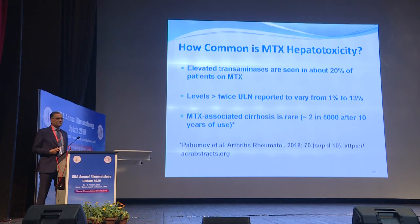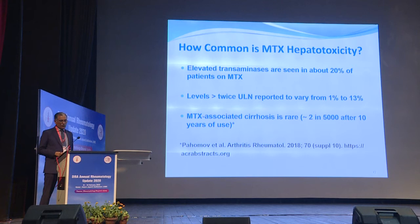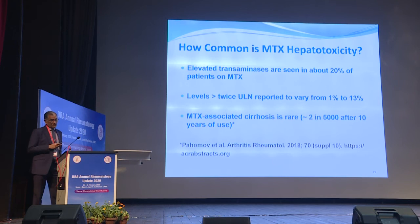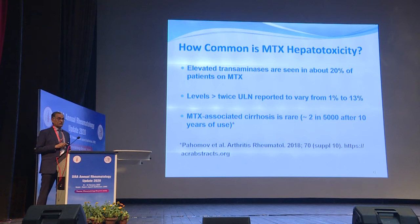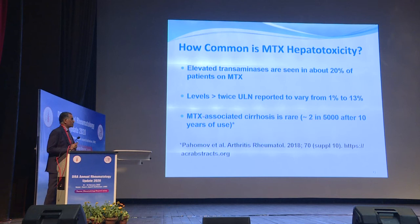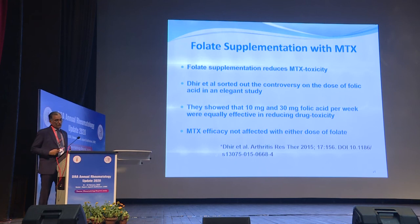How common is methotrexate hepatotoxicity? Elevated transaminases are seen in about 20% of patients on methotrexate. However, levels more than twice the upper limit of normal vary from 1% to 13% in different studies. Methotrexate-associated cirrhosis is exceedingly uncommon — current estimates are 2 in 5,000 after 10 years of use — but it does occur. Routine biopsies are not recommended after a cumulative dose of 1.5 to 2 grams.